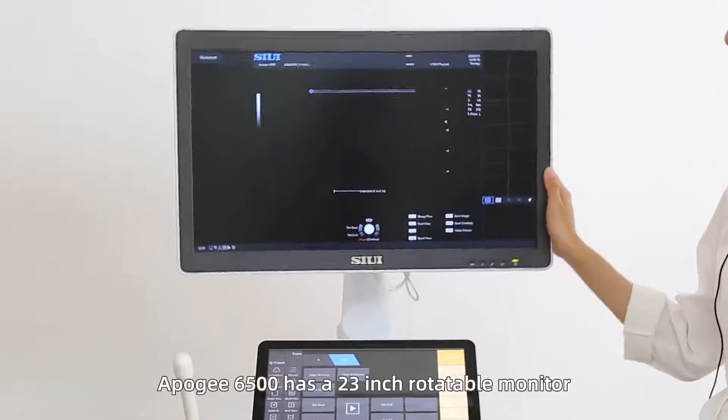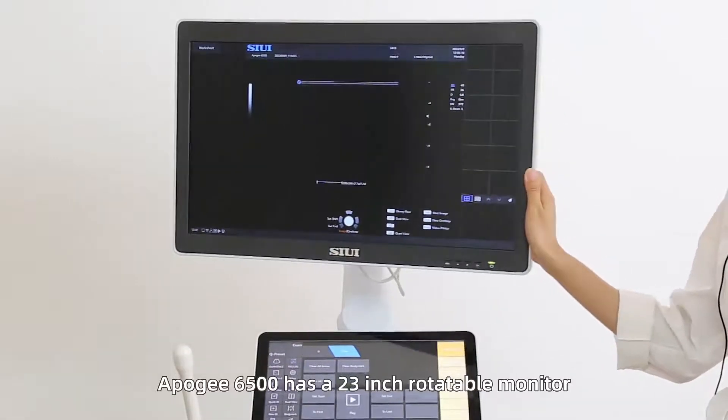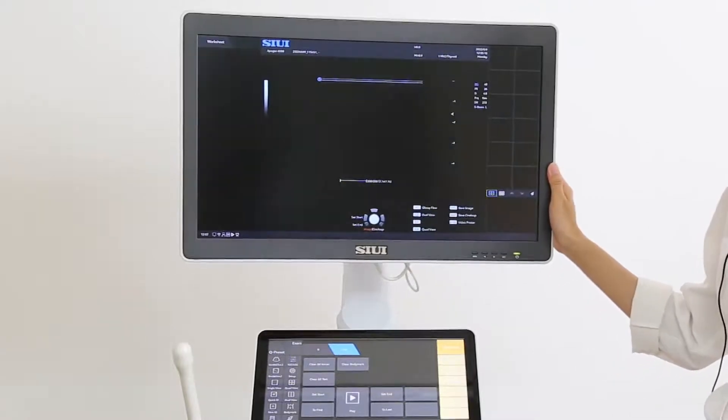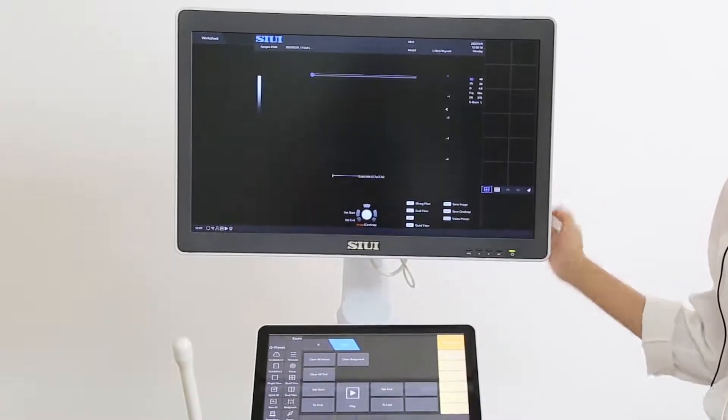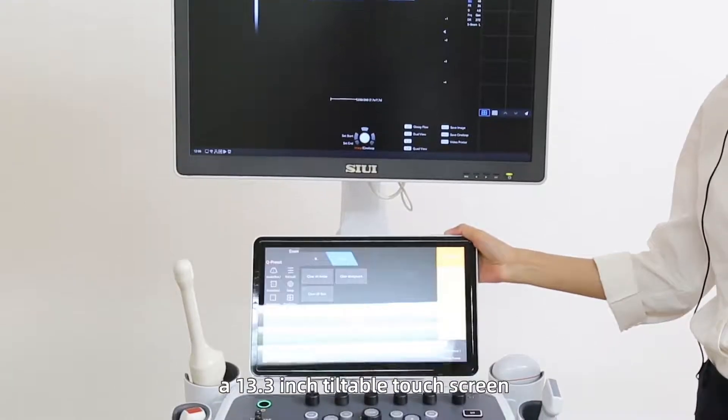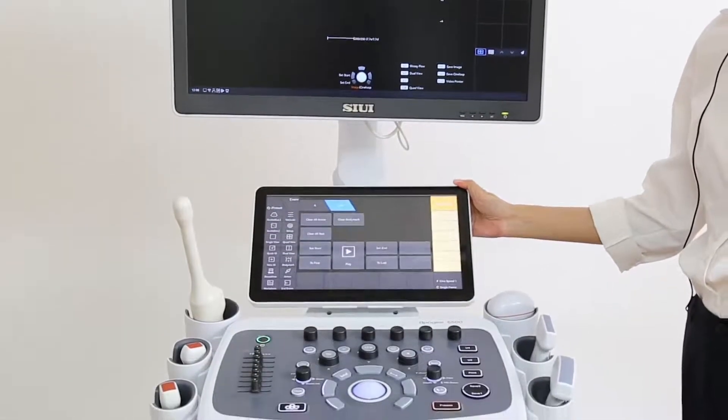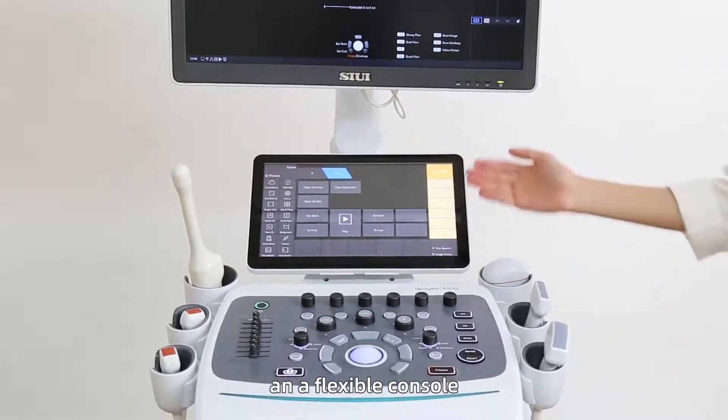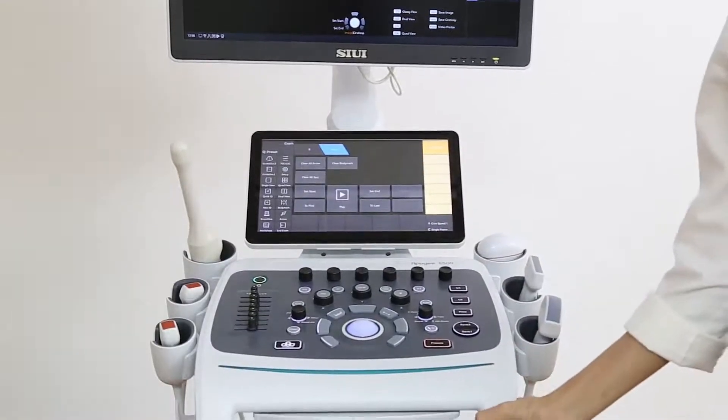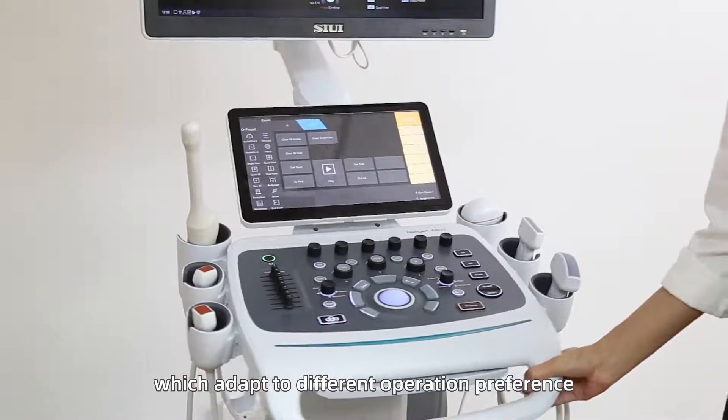Apogee 6500 has a 23-inch rotatable monitor, a 13.3-inch tiltable touchscreen, and a flexible console which adapts to different operation preferences.